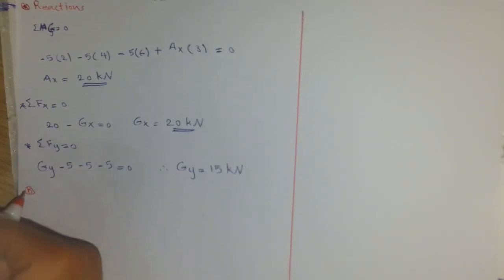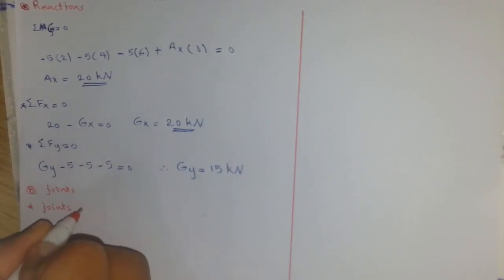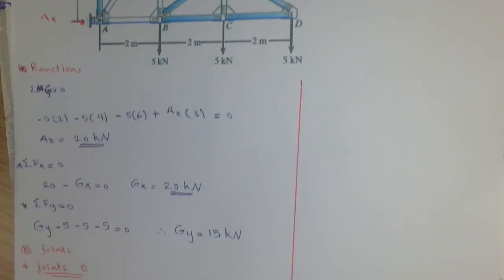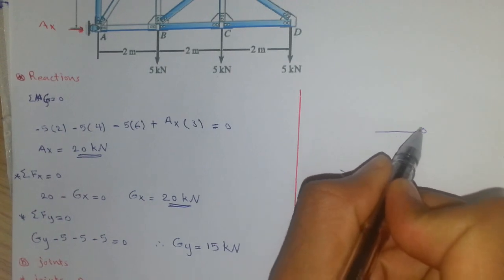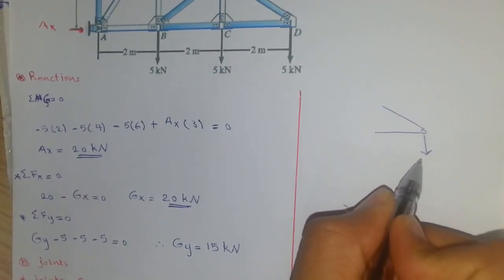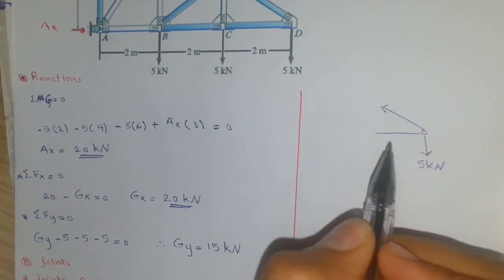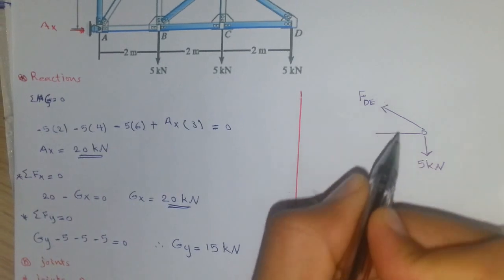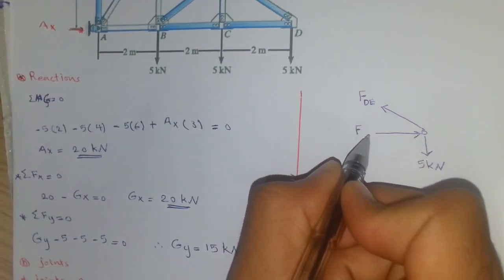We now move to the joints. We start by determining the forces acting at joint D. Since we have just two members and one force acting on that joint, joint D can be illustrated as shown. We have a 5 kilonewton force acting directly at that point. We assume tension by inspection, calling the forces F_DE and F_CD.